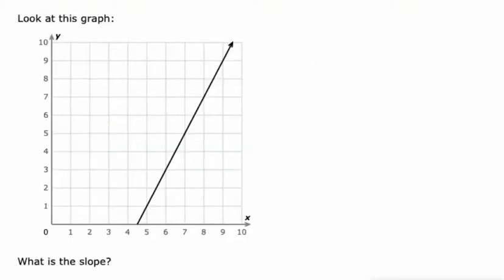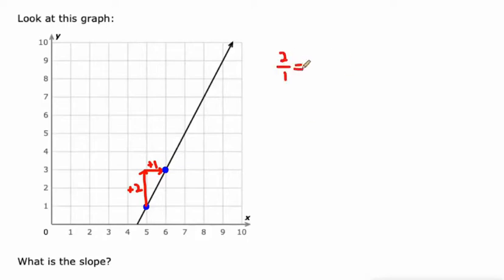Okay, let's do this again. I see this point, 5, 1 — pretty easy to identify — and then this point right here is at 6, 3, pretty easy to identify as well. So that's an increase from 1 to 3, that's 2, and the X value went from 5 to 6, that's an increase of 1.